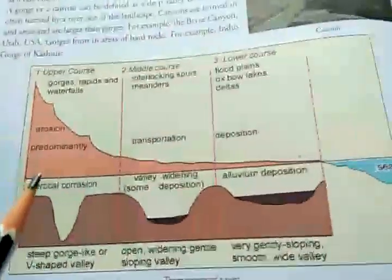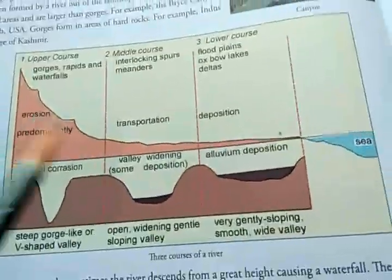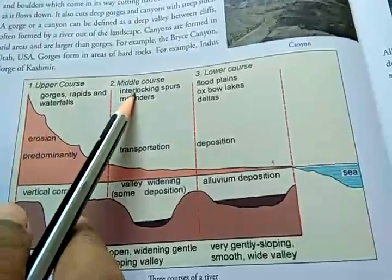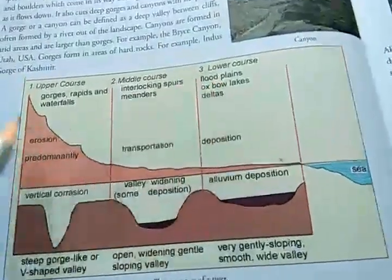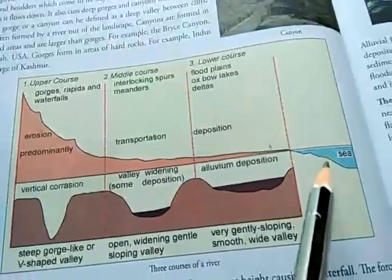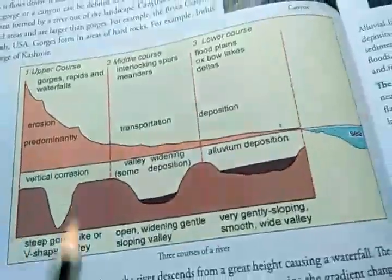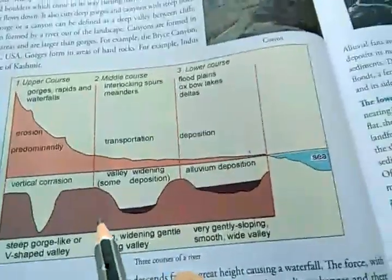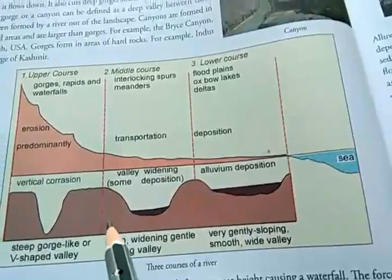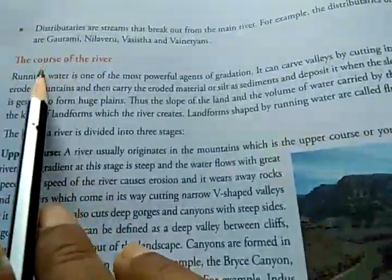In the course of the river we will discuss the three courses. You can see in this diagram: the upper course, middle course, and lower course. I had asked you to draw this diagram — if you have drawn it, very good; if not, draw it in your geography copy. So what do we mean by the course of the river?